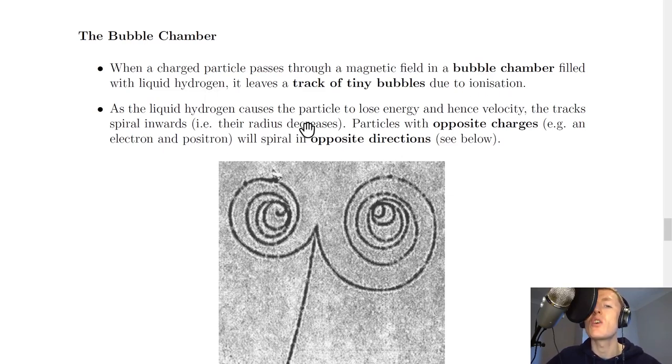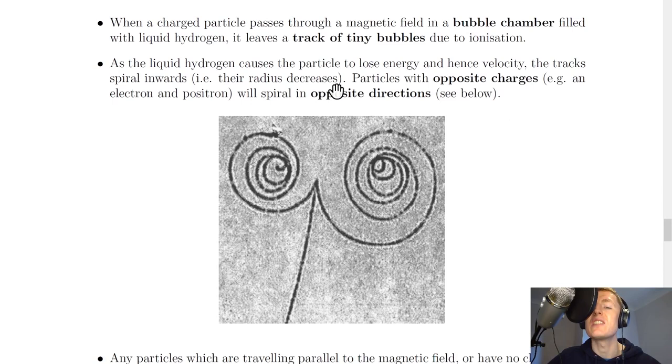As the liquid hydrogen causes the particles to lose energy and hence velocity, the tracks spiral inwards—that is, their radius decreases.